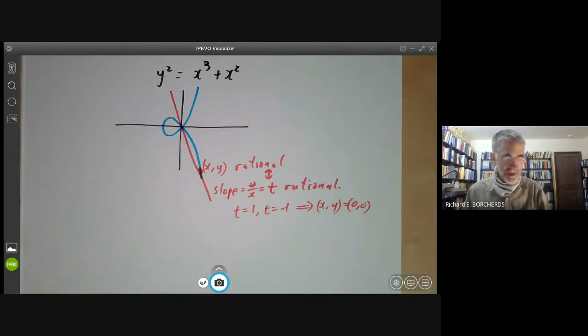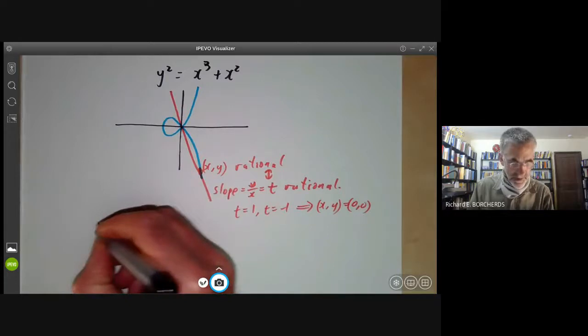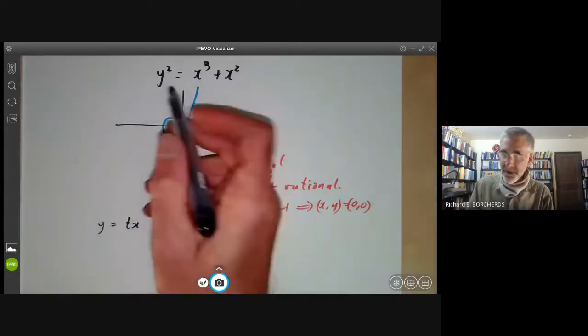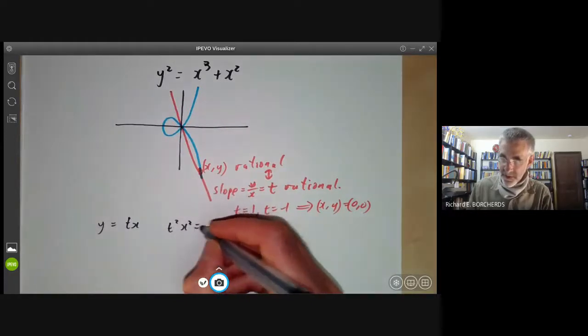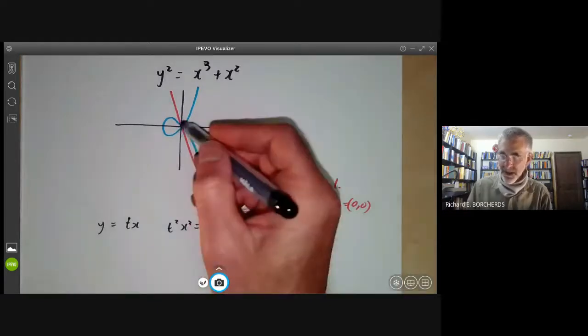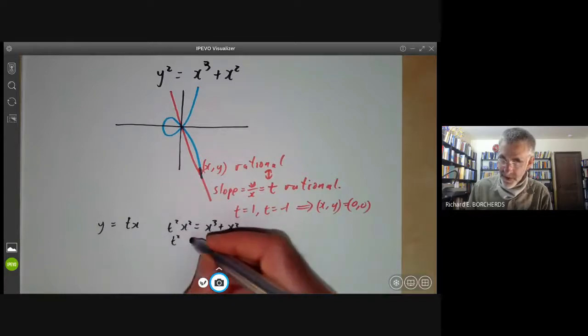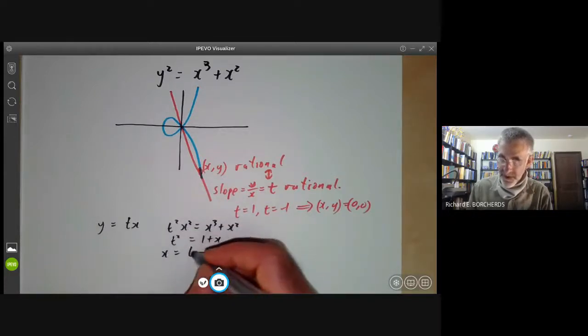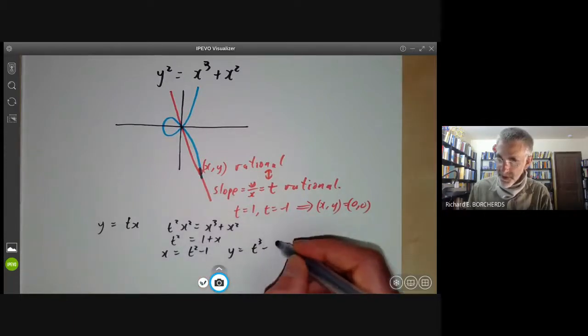We can, of course, work out x and y in terms of t. So we have y equals tx. So if we substitute that in there, we find t squared x squared equals x cubed plus x squared. And if we divide through by x squared, because we're not interested in the point zero, we find t squared equals one plus x. So we find x equals t squared minus one, y equals t cubed minus t.